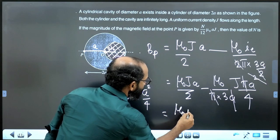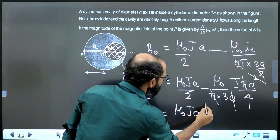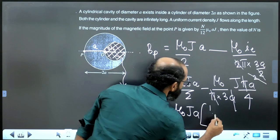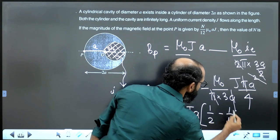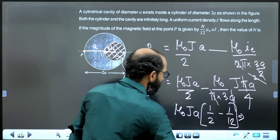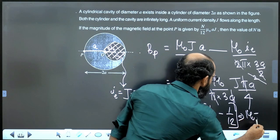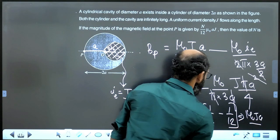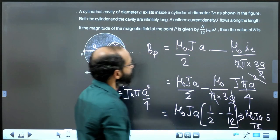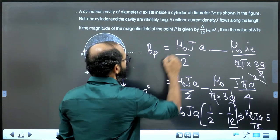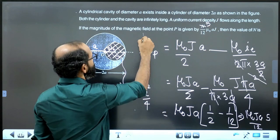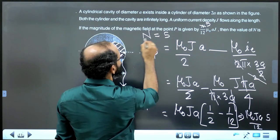Then, rest of that when we work out mu0JA common factor into 1 by 2 minus 1 by 12. This can be written as mu0JA multiplied by 5 by 12. That is why the correct answer would be n is equal to 5. So, single digit integer n is equal to 5 is the correct answer.